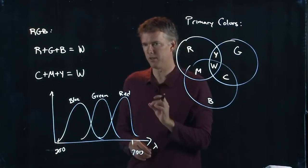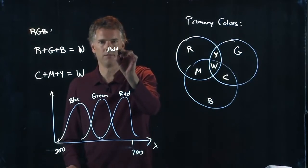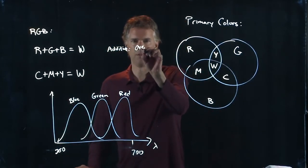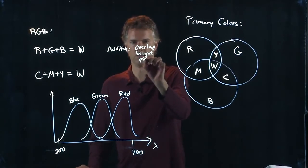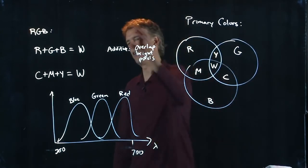Now, there's two types of colors that you have to worry about. There's additive, and this is when you overlap bright pixels, like in your computer monitor. And that's RGB.